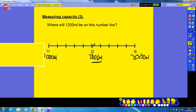So instead, I'm going to count up in 200s: 1200, 1400, 1600, 1800, 2000, 3000. So therefore it is going up in 200, not in 100. So in fact 1200 milliliters on here will be there, this is 1200 milliliters.